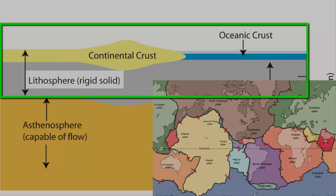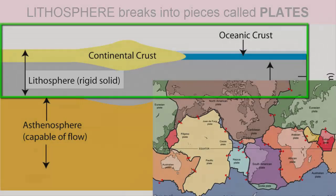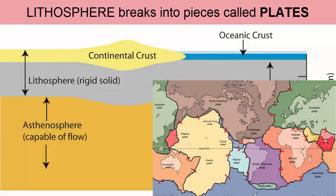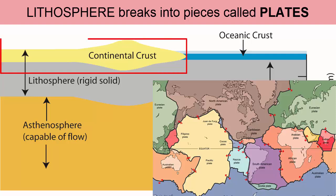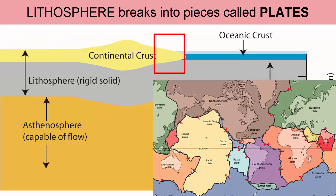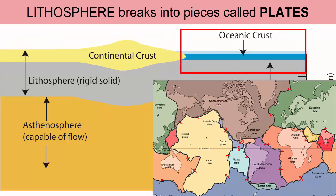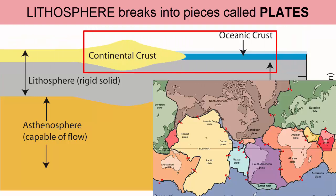The lithosphere is broken up into pieces that we call plates. Some of the pieces contain continental crust, some ocean crust, and some contain both side by side.